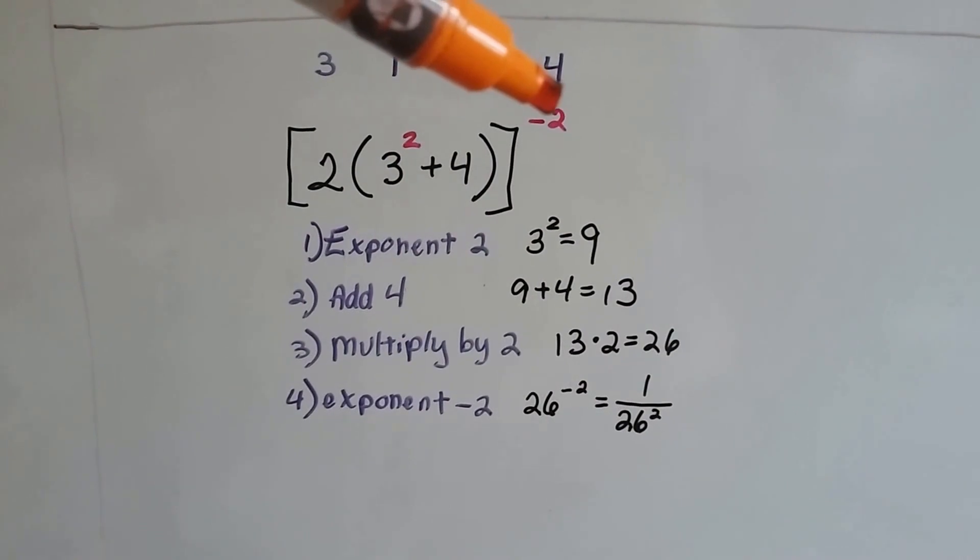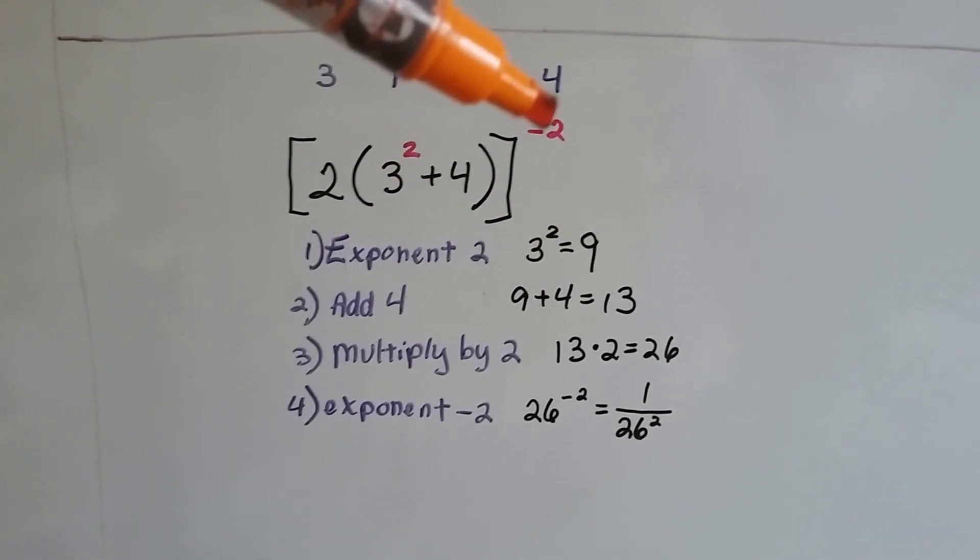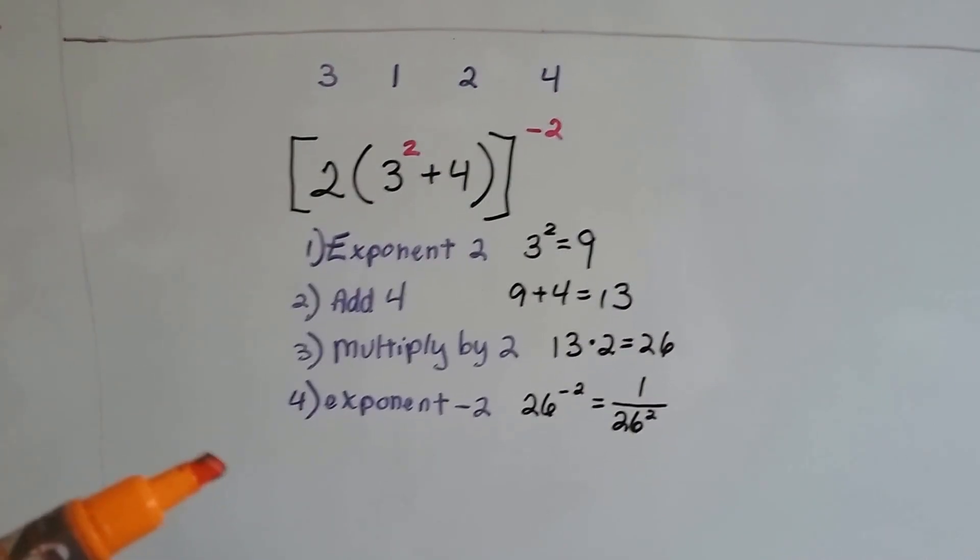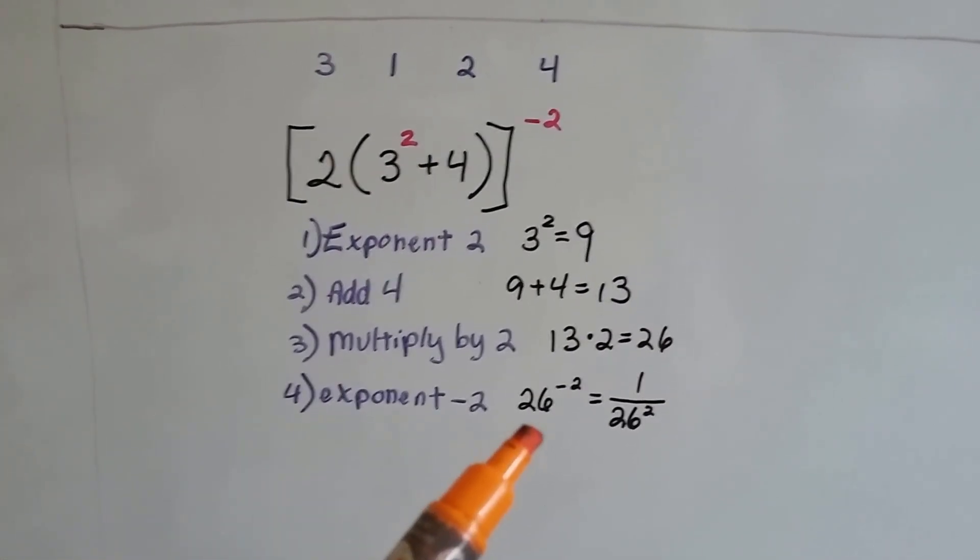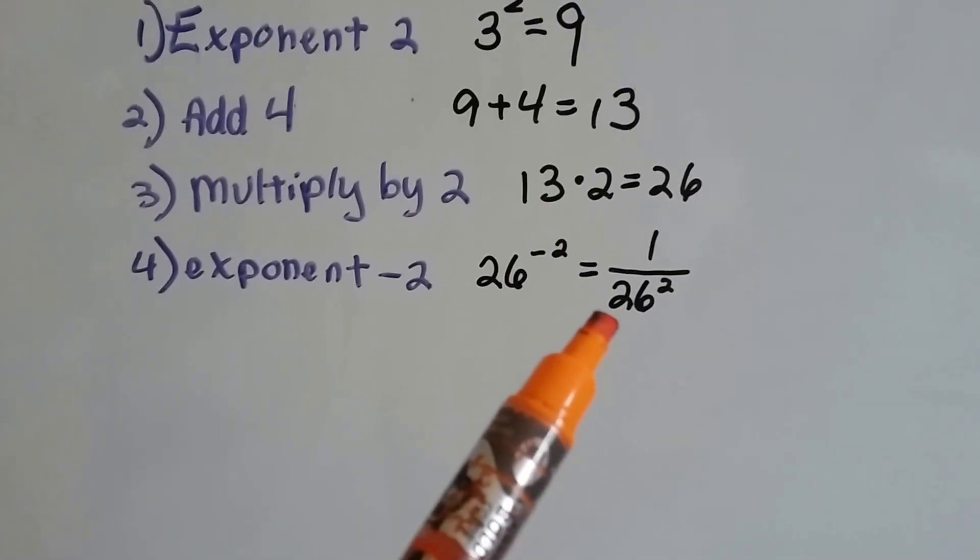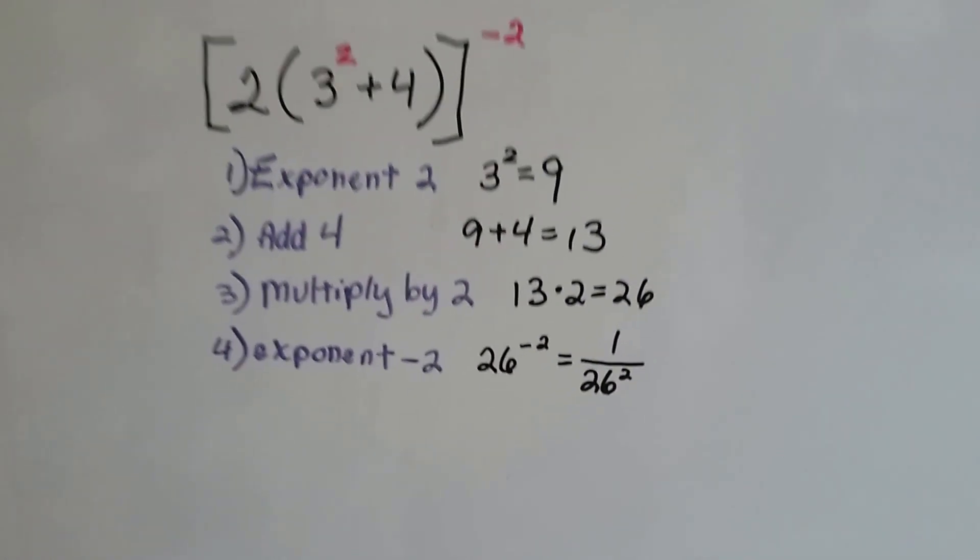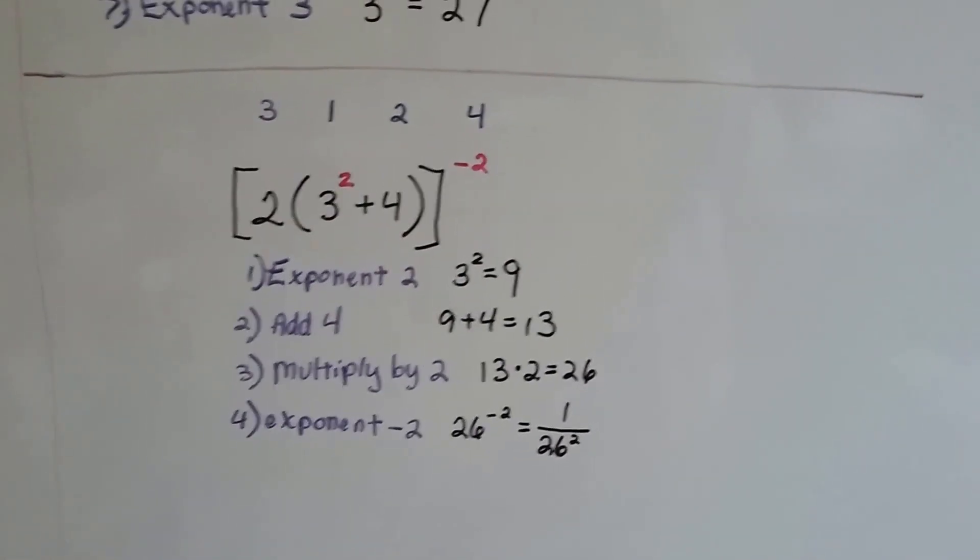And outside the bracket is the last thing we do is this negative 2 exponent. That means it's a fraction. So 26 to the negative 2 means 1 over 26 to the second power. The whole thing got reduced to a fraction.